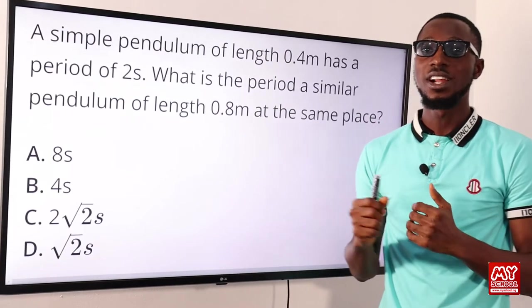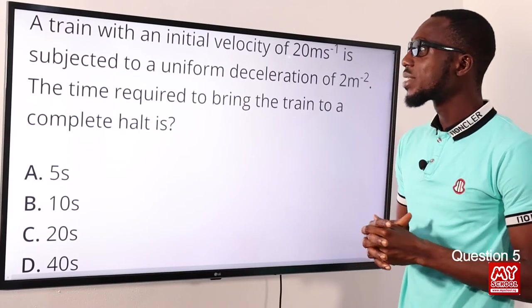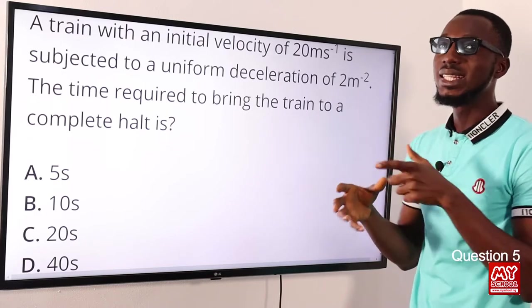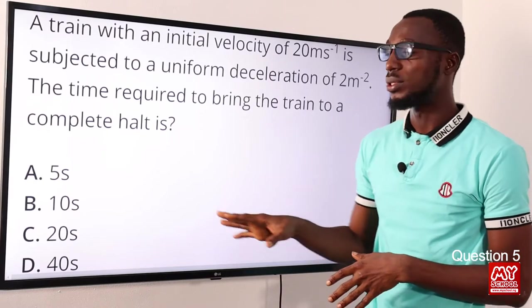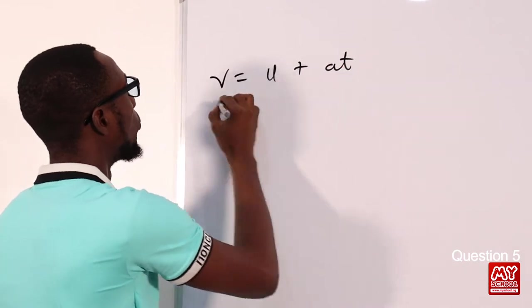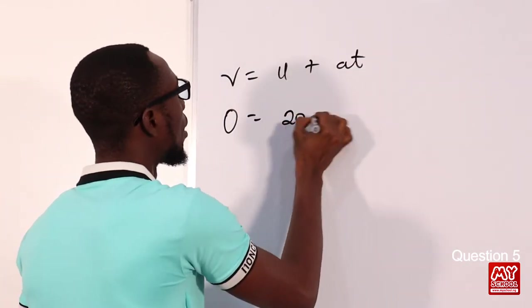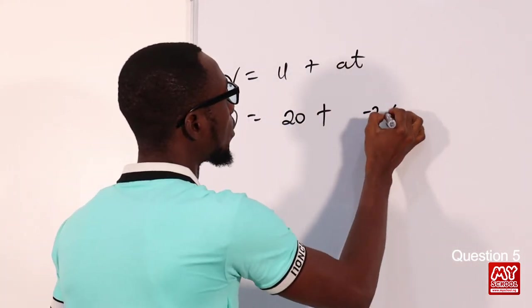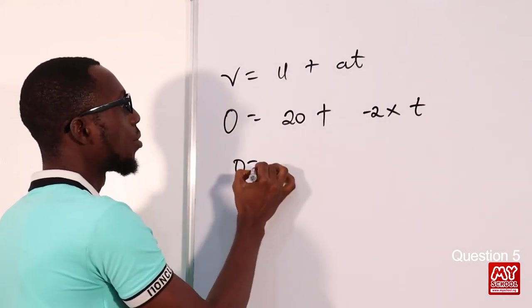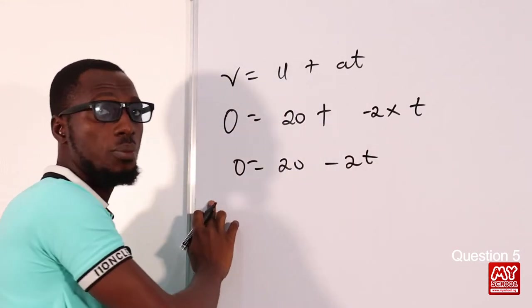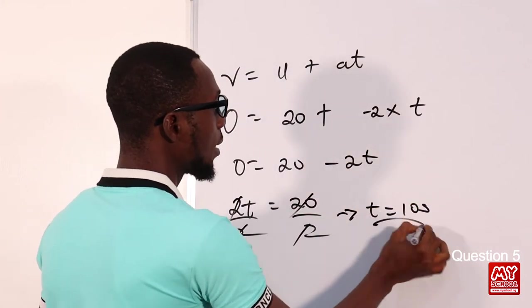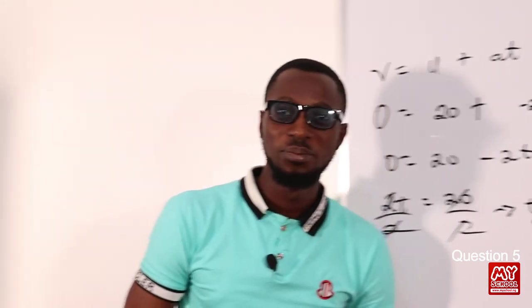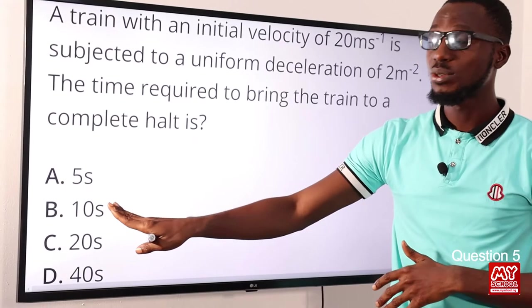Question five: a train with an initial velocity of 20 m/s is subjected to a uniform deceleration of 2 m/s². The time required to bring the train to a complete stop is found using the first equation of motion: v = u + at. Setting v = 0: 0 = 20 + (−2)t, so 2t = 20, giving t = 10 seconds. Option B is the correct answer.